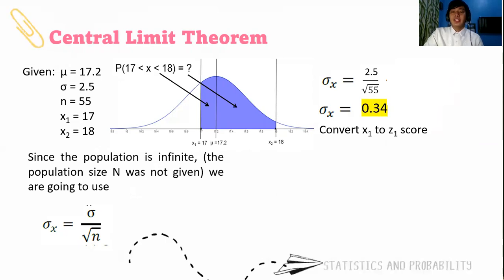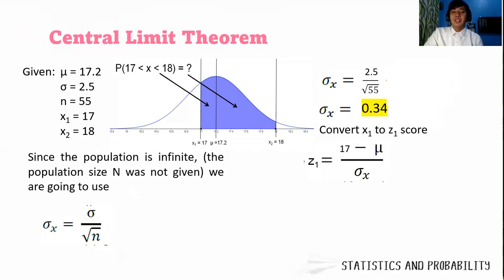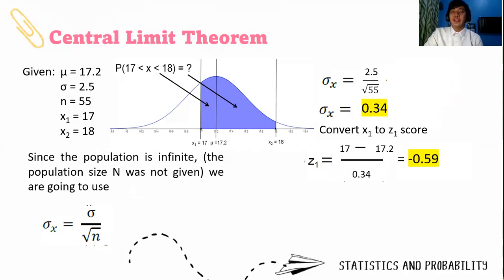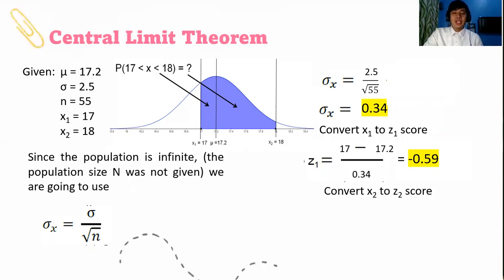We convert x₁ to a z₁ score. That will be 17 minus 17.2 divided by 0.34. The answer is negative 0.59. Obviously, our x₁ is located on the standard score negative 0.59.